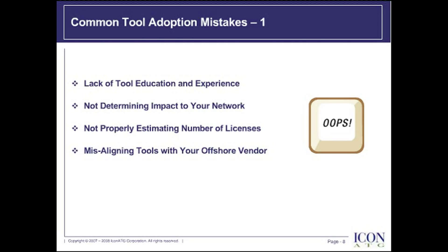The second mistake is not determining the impact to your network. Many of the tools we purchase have underlying databases to retain data, and one must consider where they install their tools and the number of hops required to access that data. In one company, we installed our version control and defect tracking tool in our data center, but nearly 90% of the primary users were in another building with limited bandwidth between them. The development team's performance was adversely impacted during code check-in, check-out, and builds — with builds running for hours. After redeploying the product to the users' building, the same build that had run for hours now took less than 20 minutes. Determining your network topology and how the tool should live within your network should not be an afterthought.